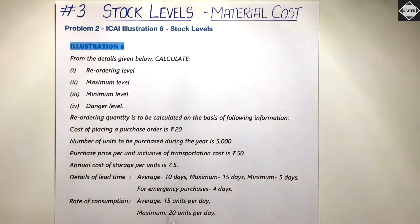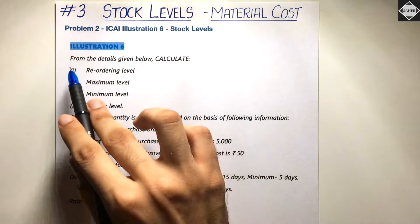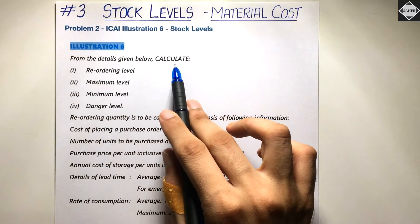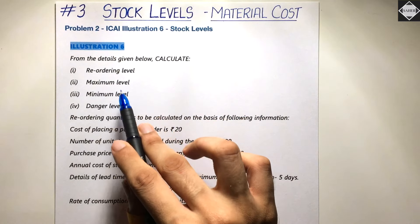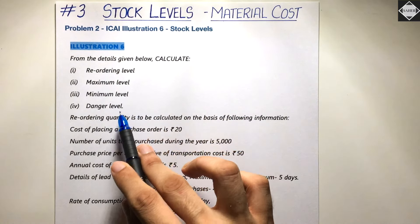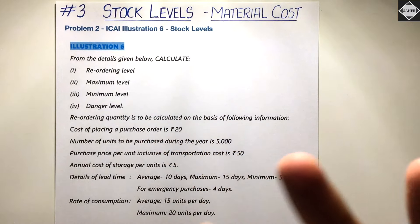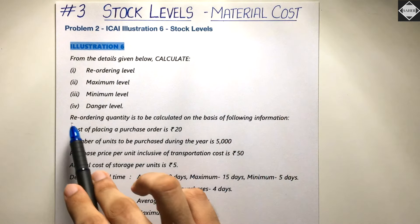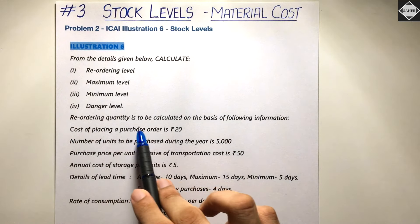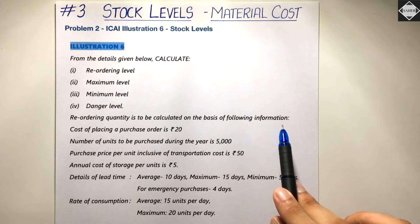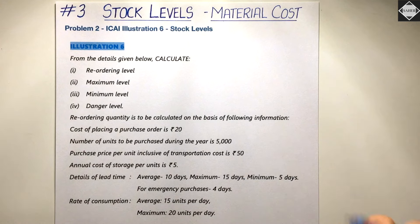We have illustration 6 from the ICAI study material. The question asks us to calculate: reordering level, maximum level, minimum level, and danger level — four levels. Reordering quantity is to be calculated on the basis of the following information.